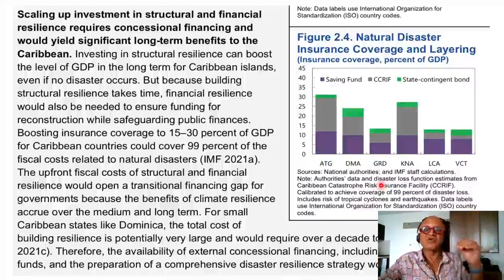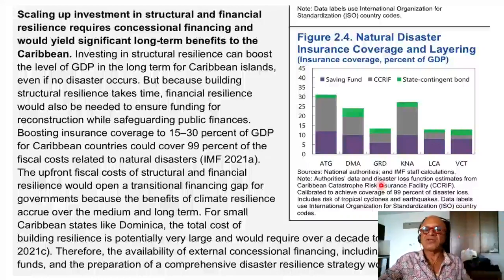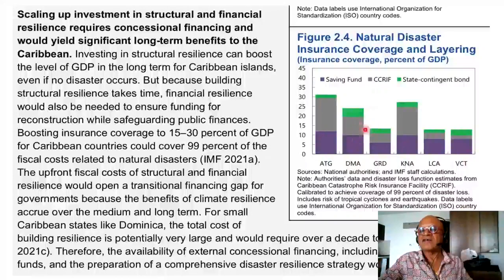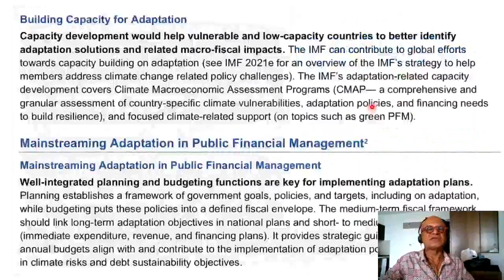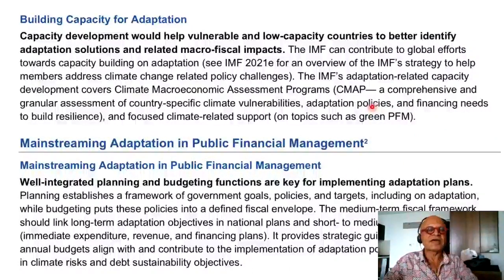The reinsurance companies are always scrutinizing the risks being underwritten. Looking at the different sub-regions, there are saving funds at various levels, CCRIF estimates of disaster loss functions at various levels, and state-contingent bonds, which represent the smallest fraction. These are things one has to keep in mind.